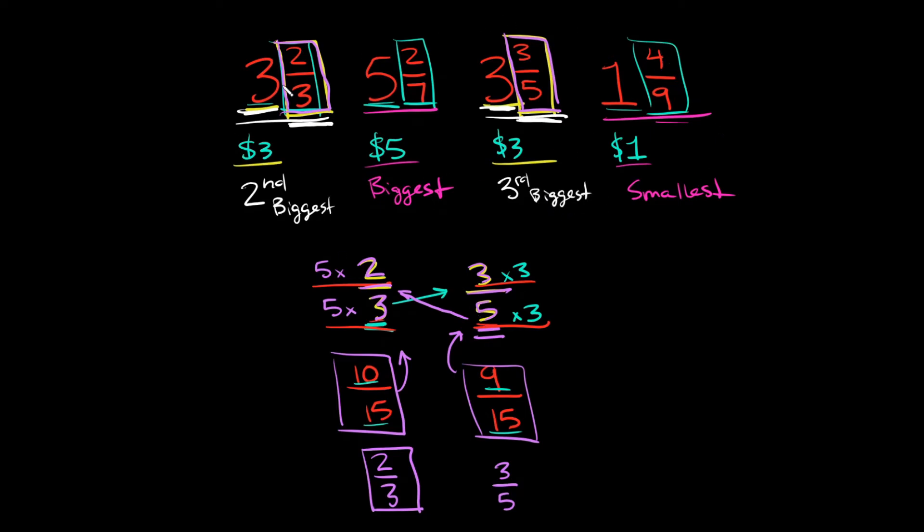So again, if we wanted to order these from least to greatest, we said this one is the smallest one, 1 and 4 ninths. So that's our smallest one. Our second smallest one would be this one, 3 and 3 fifths. Next, we would have this one, 3 and 2 thirds. And then lastly, our biggest one was 5 and 2 sevenths.